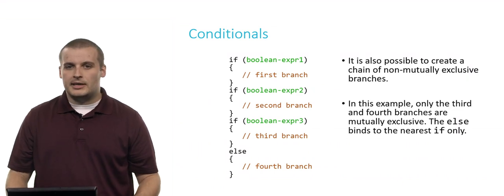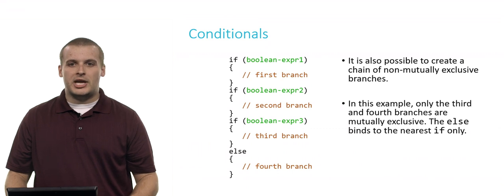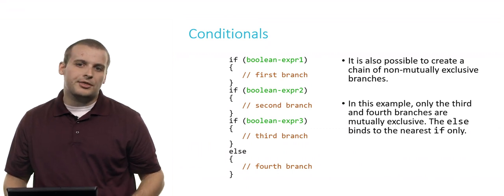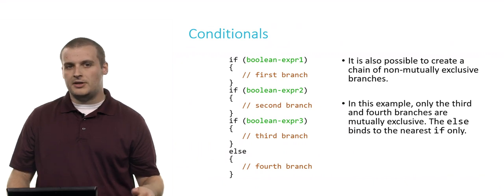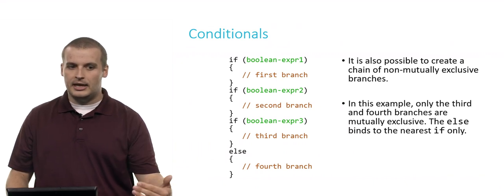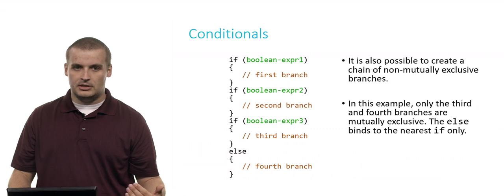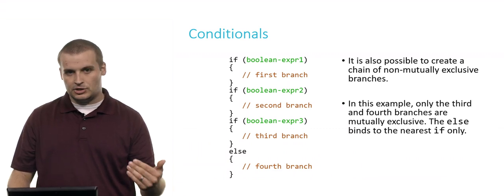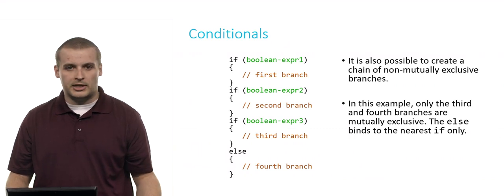It is possible, though, and sometimes very useful, to create a chain of not mutually exclusive branches. In this example, only the third and fourth branches are mutually exclusive. It could be that you could satisfy the first condition, and you could satisfy the second condition, and you could satisfy the third condition, in which case you would go down the first branch, then you would go down the second branch, then you would go down the third branch.